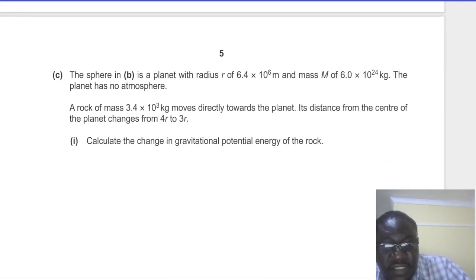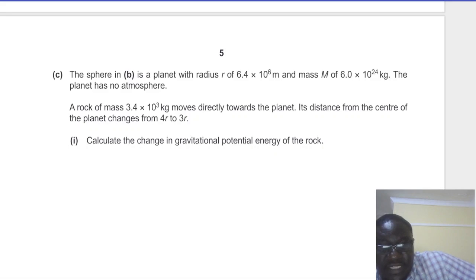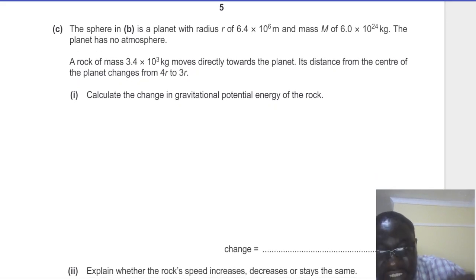Then part C says the sphere in B is a planet with radius R of 6.4 times 10 to the power of 6 meters and a mass M of 6.0 times 10 to the power of 24 kg. The planet has no atmosphere. A rock of mass 3.4 times 10 to the power of 3 kg moves directly towards the planet. Its distance from the center of the planet changes from 4r to 3r. Part 1 says calculate the change in the gravitational potential energy of the rock.